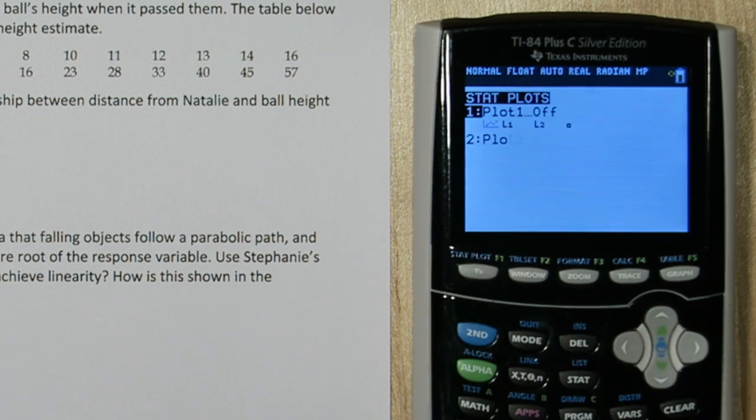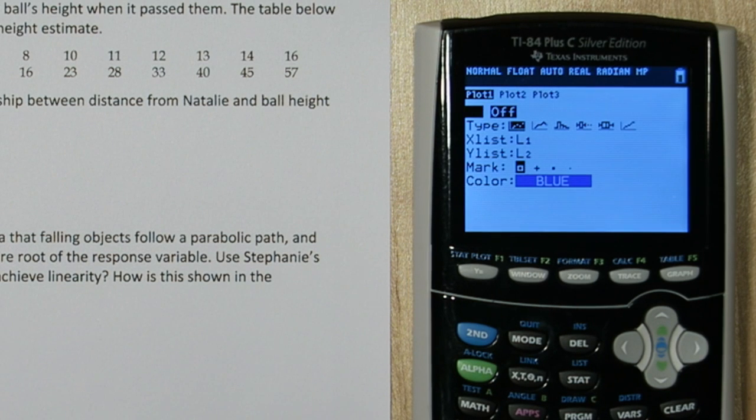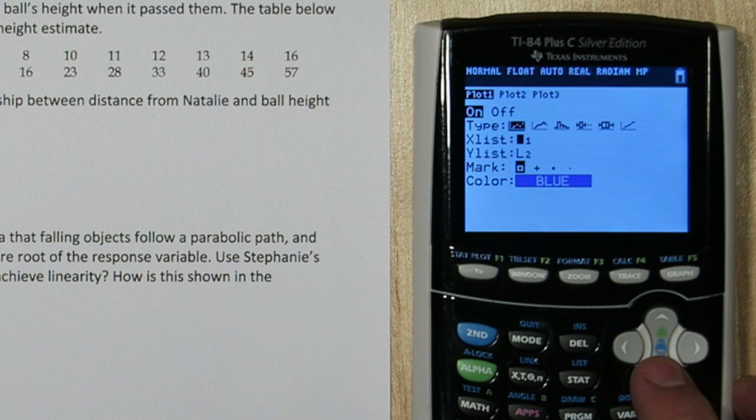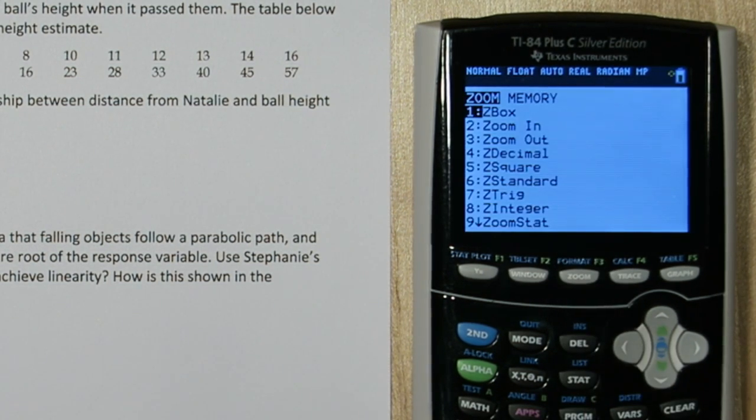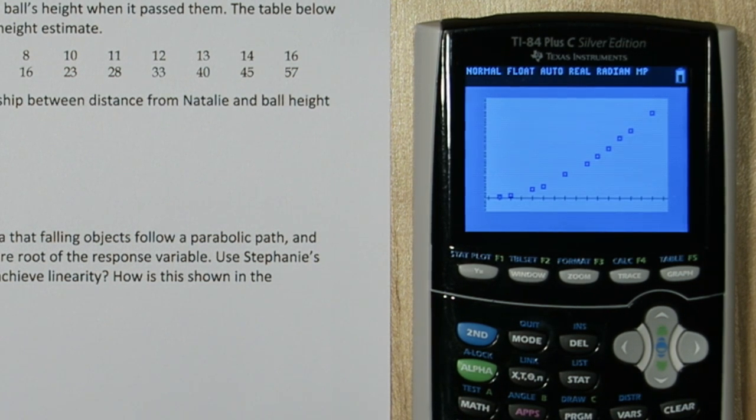Now press second and y equals to access your stat plot menu. Press enter on plot 1, turn it on, and it's already selected scatter plot with list 1 and list 2. So that's perfect. We're just going to press zoom and the number 9. Alright, here's a scatter plot.